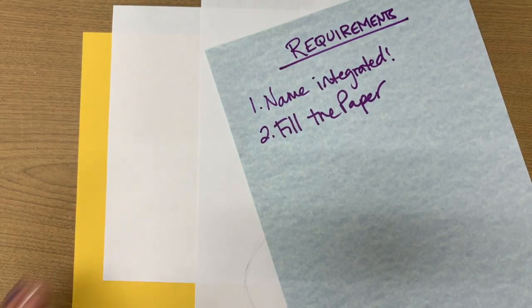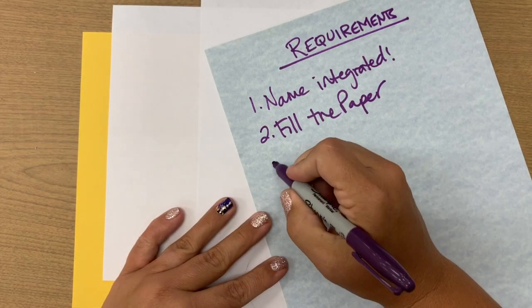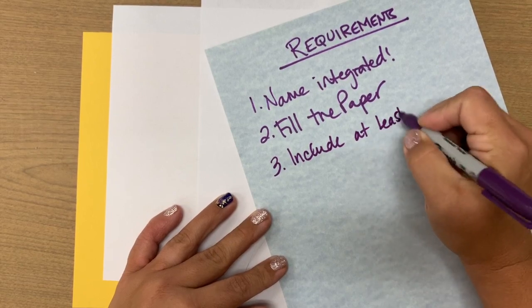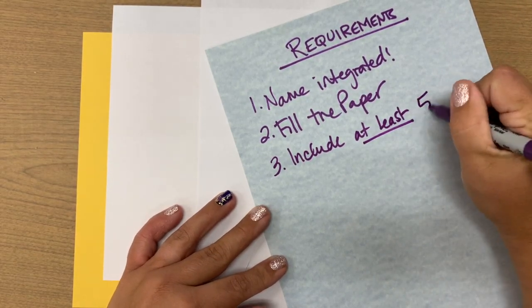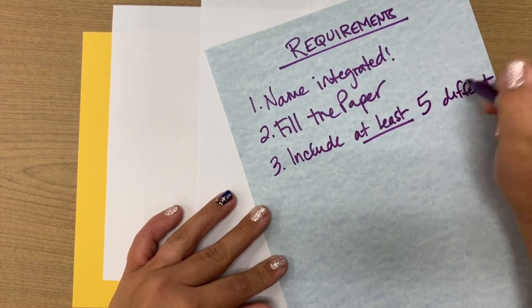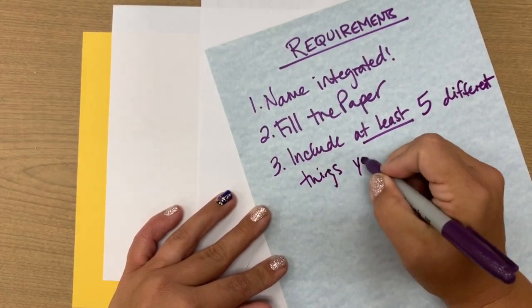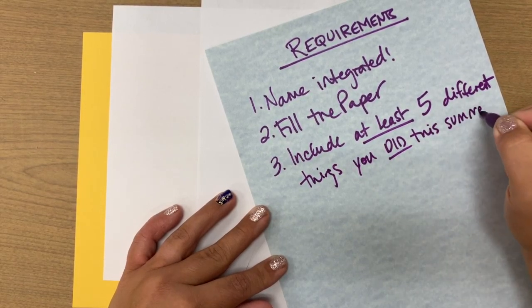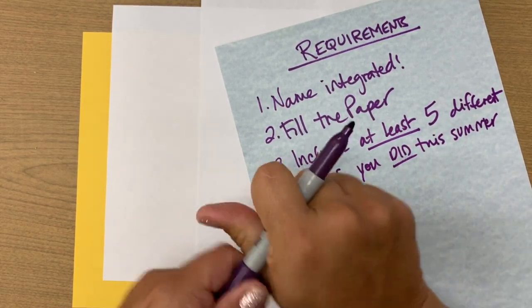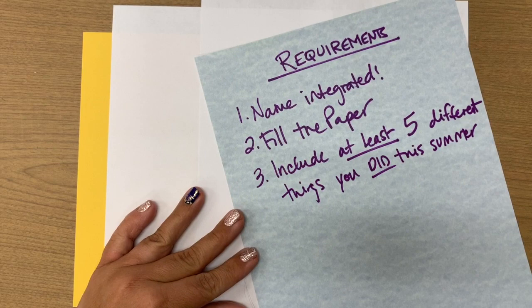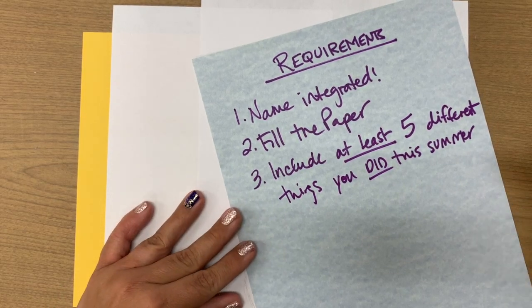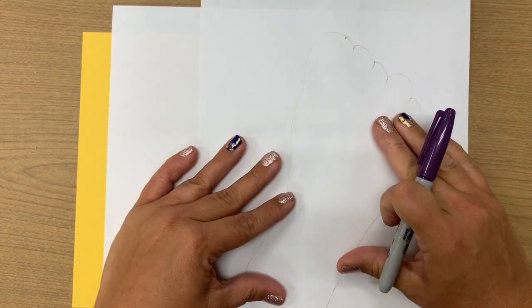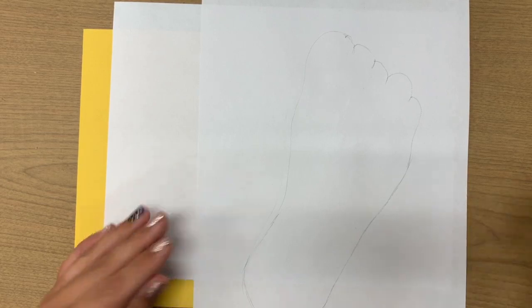The last requirement is that you include at least five different things you did this summer during quarantine. I don't know if you've been at home this entire time or if you've been going out - there's no judgments here, just tell us five different things that you did this summer and illustrate it somehow in here. You could use magazines - maybe you went to the beach and you find a picture of the beach and you want to glue that in and draw around it.